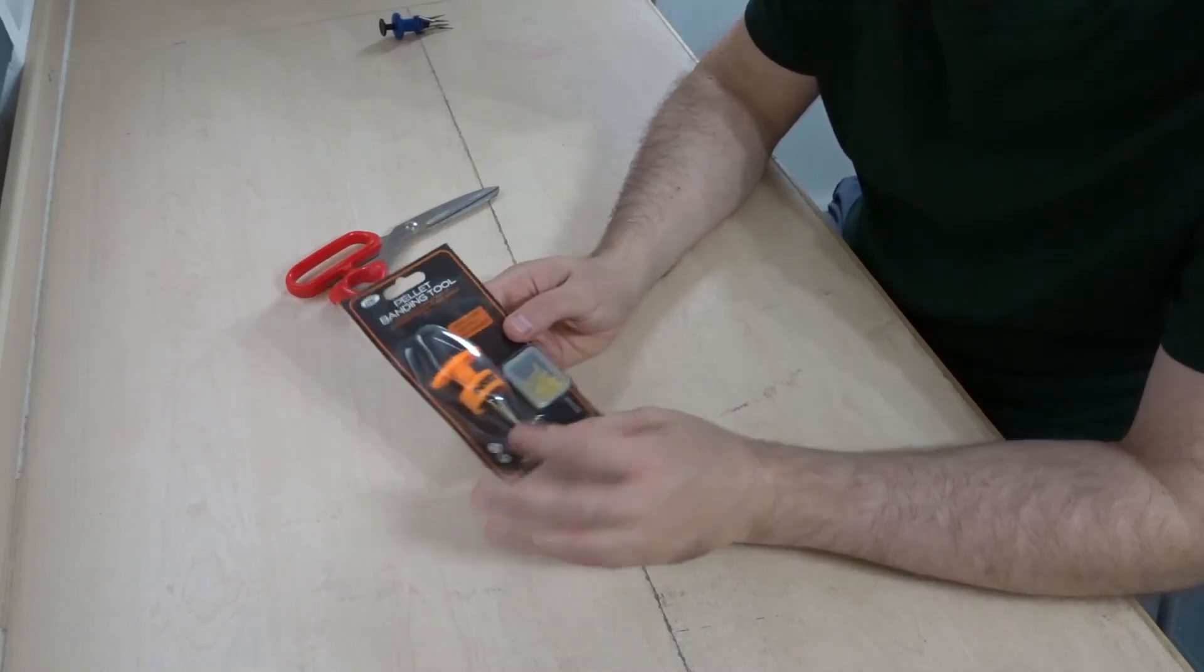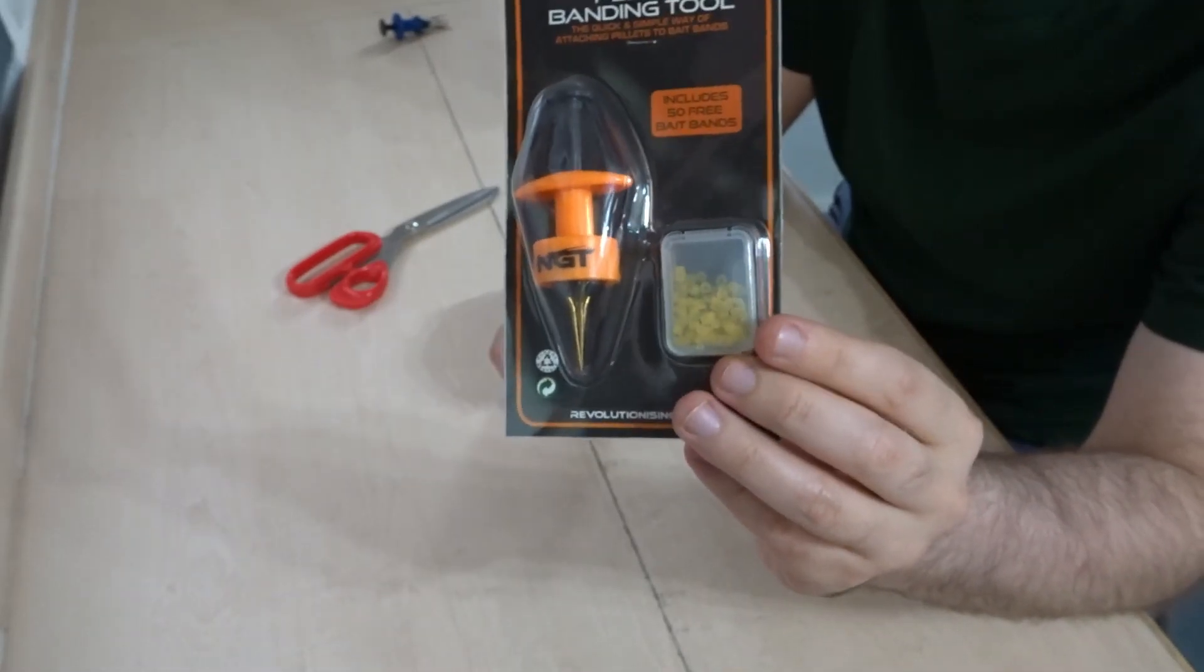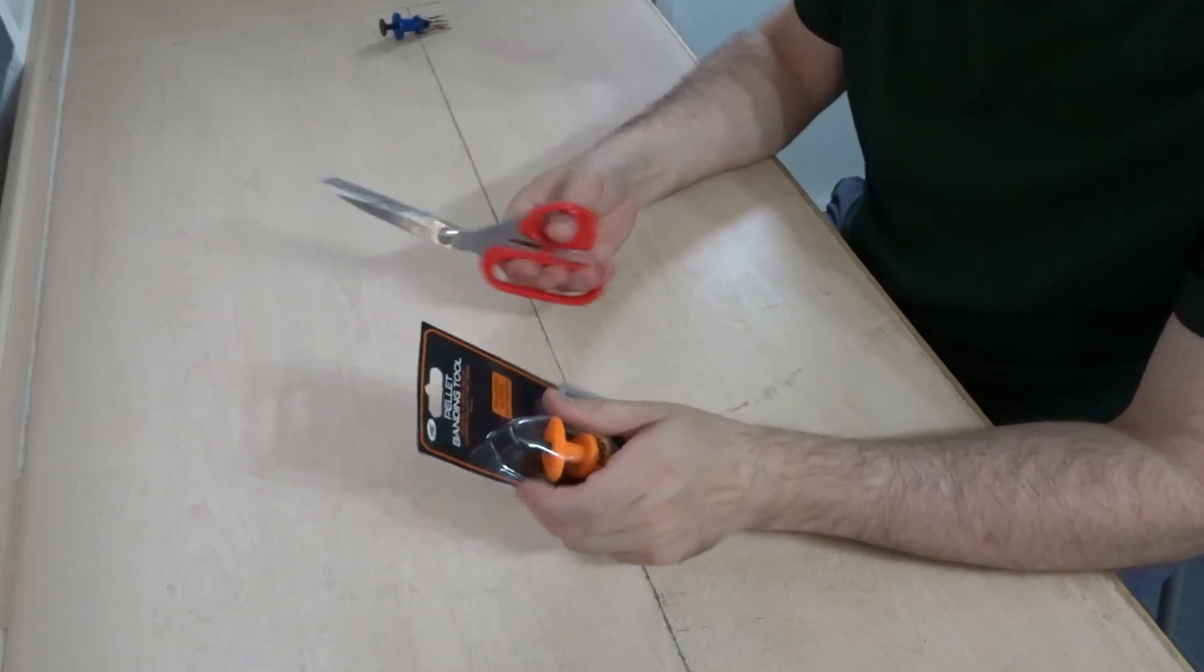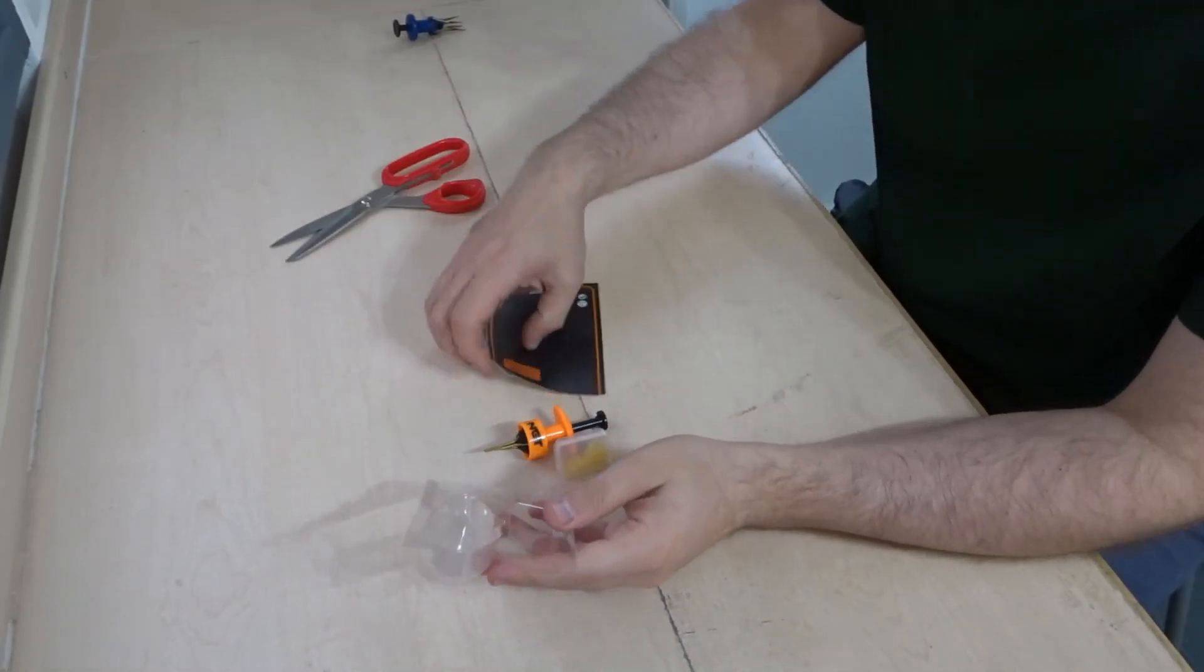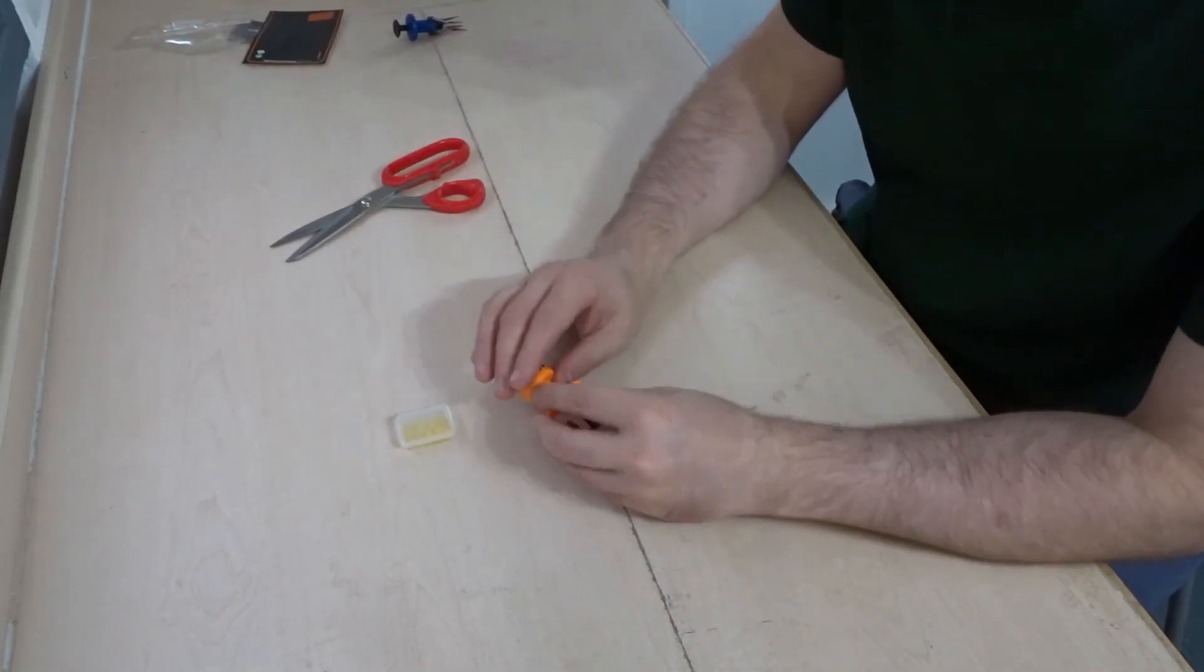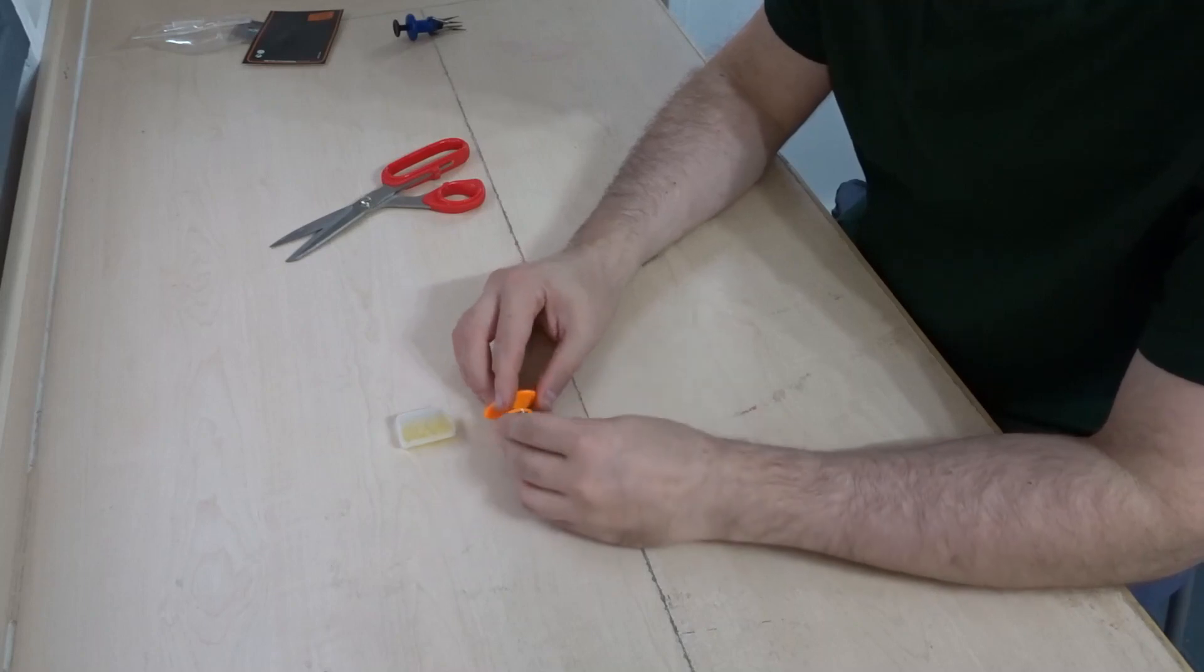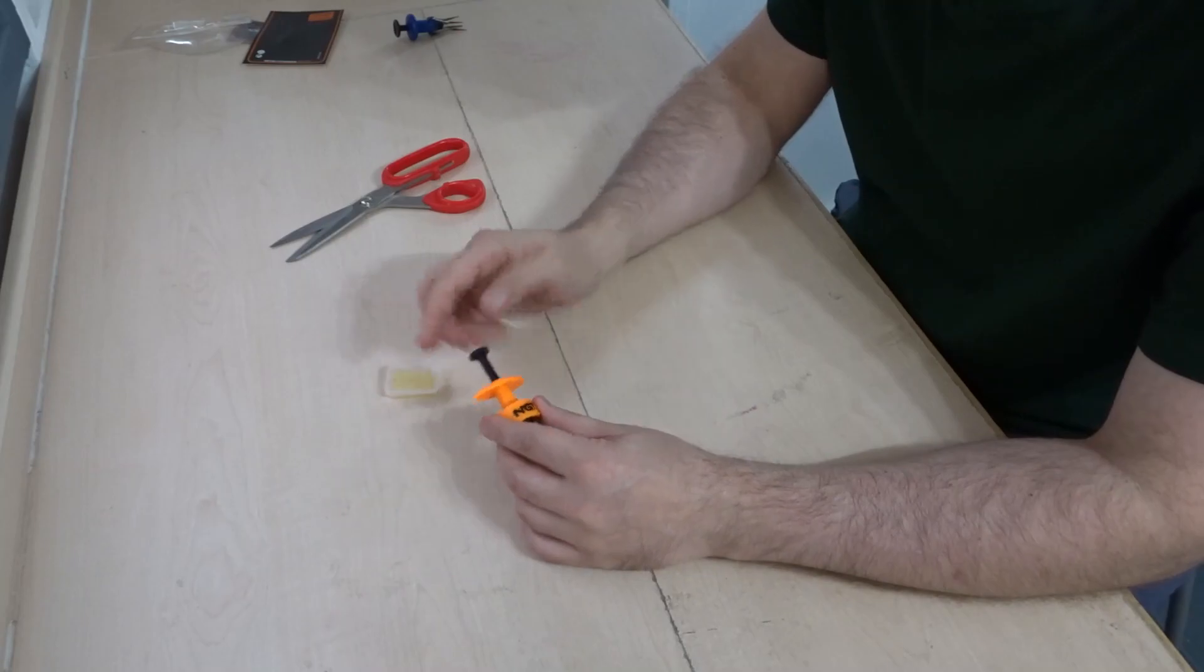Here is the new one that I've bought, and it also comes with a little container full of pellet bands. Inside you get the pellet bander itself and a little tub of pellet bands, which is a nice accessory to get.